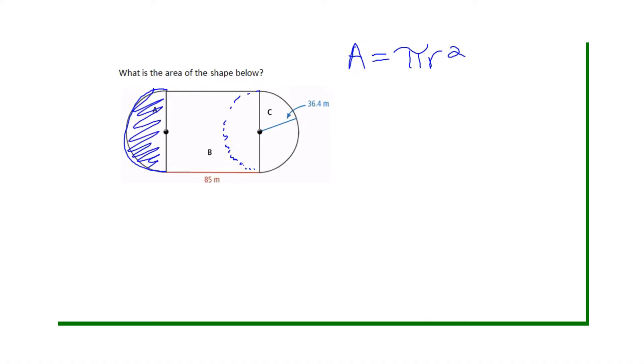We took this piece away and we combined it over here. Now it looks like a complete circle. Now we can see that this blue line actually represents the radius of the circle.